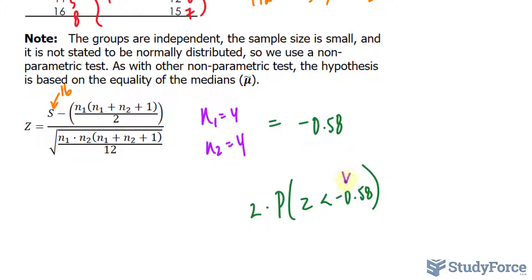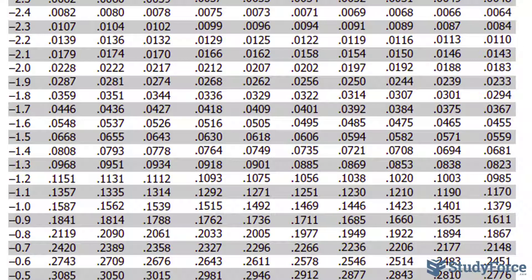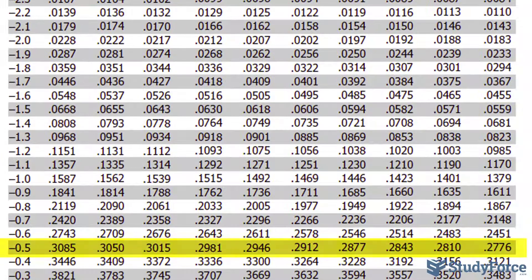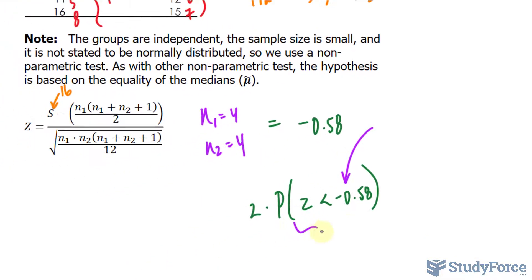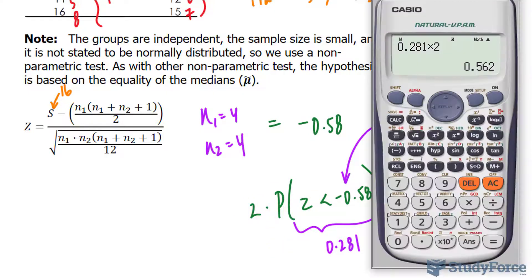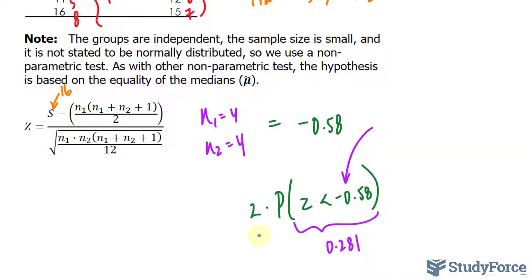This p-value will be found in a Z-table, and here's what the table should look like. For negative 0.58, we look up negative 0.5 in the row and 8 in the column, giving a value of 0.281. Then 0.281 times 2 gives us a p-value of 0.562.